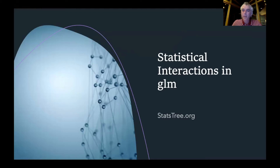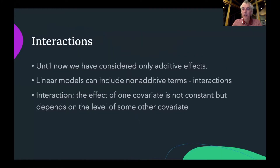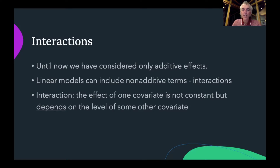Hello everyone. Today we're going to be talking about statistical interactions in general linear models. Most of what we've talked about so far with respect to general linear models has dealt with only additive or main effects, but in general linear models we can also include statistical interactions. A statistical interaction means that the effect of one covariate is not constant — it depends on the level of some other covariate.